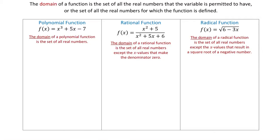Let's start with the polynomial function f of x equals x cubed plus 5x minus 7. This expression represents a polynomial, and in any polynomial, if we replace x with any number we would not have any restriction and we would always get an answer. Therefore the domain of a polynomial function is the set of all the real numbers.